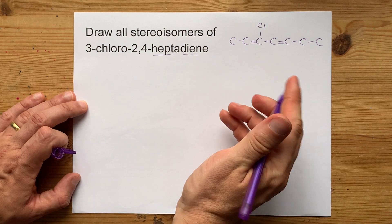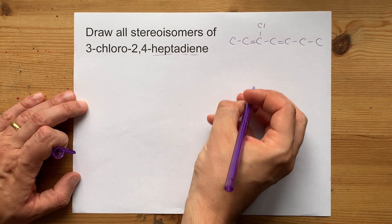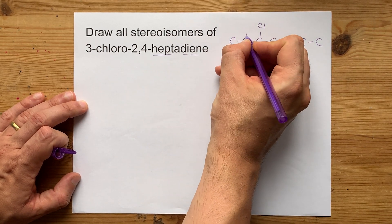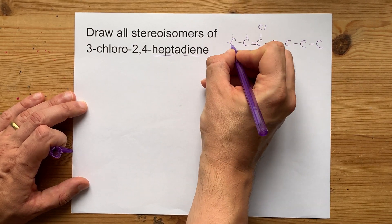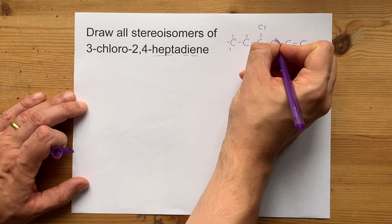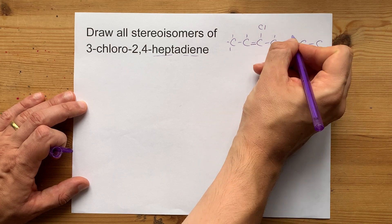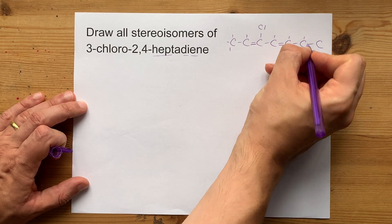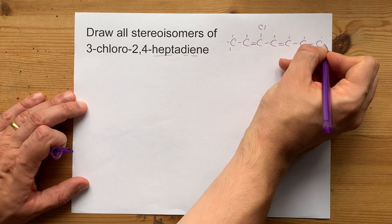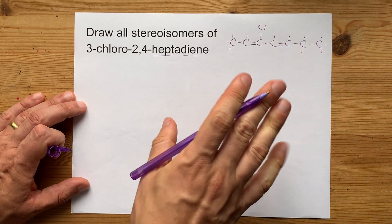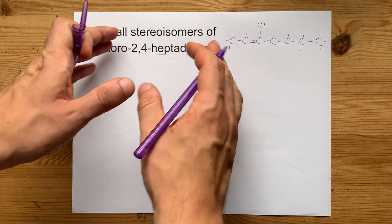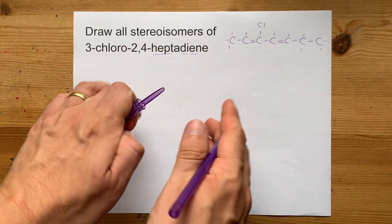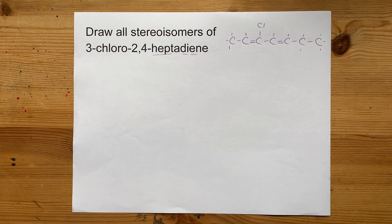There are hydrogens on all the other carbons in all the other spaces: one there, three here, one here, one here, two here, and three there. Now, where can stereoisomerism play a role here?